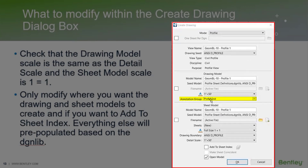You can change the annotation group here. If you want one sheet per DGN, you can check this and you'll have your sheet and your drawing model go to its own sheet. Or by checking this, you can have all of your drawing models in the same file or in a different file, and the same applies for the sheet model.